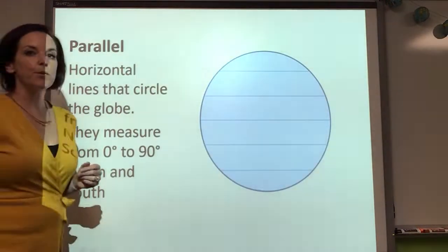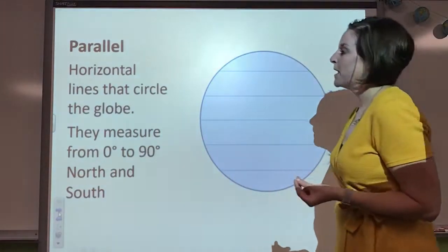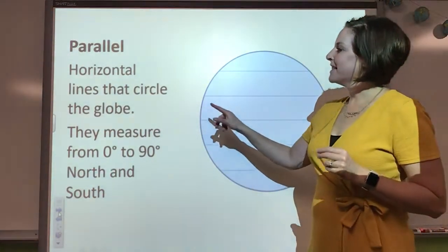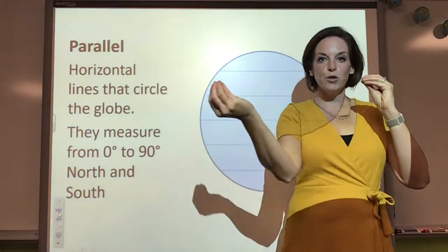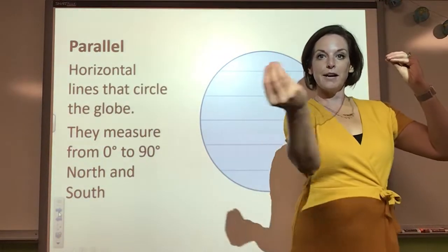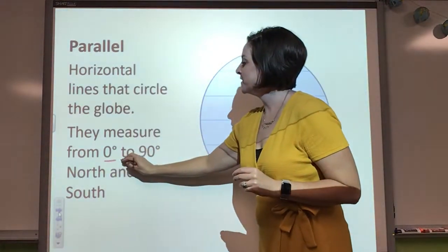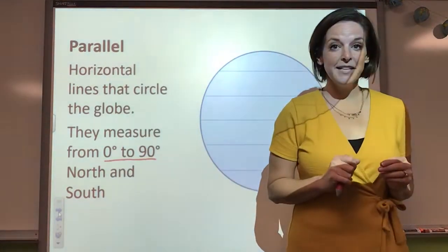Moving along, so these are going to be parallel lines. Parallel lines, and they are going to circle around the globe. Now, they measure zero degrees to 90 degrees.